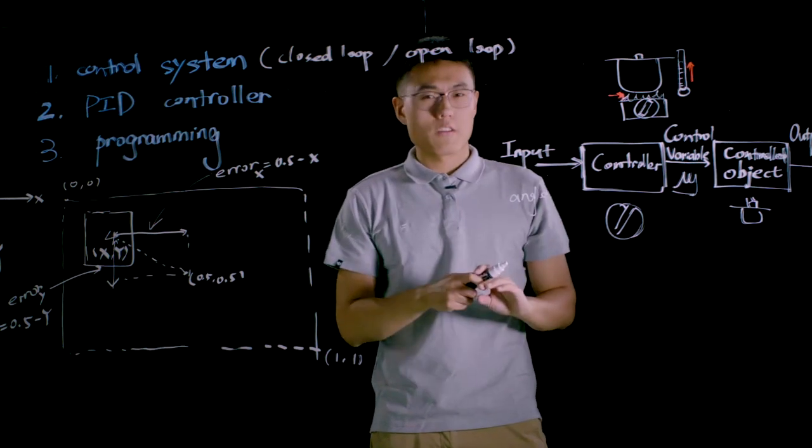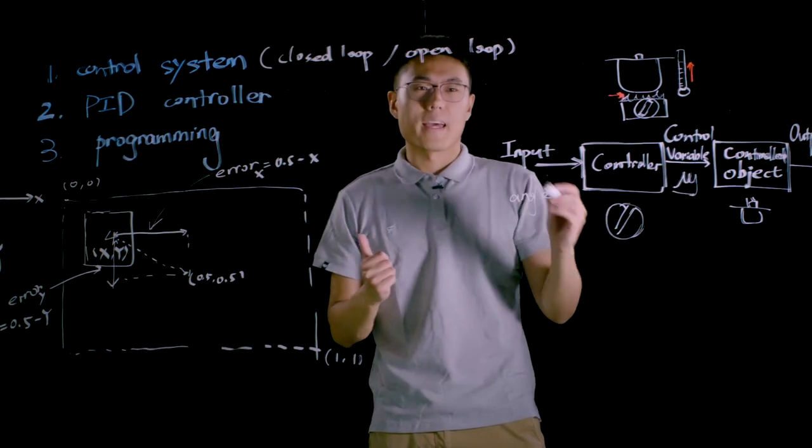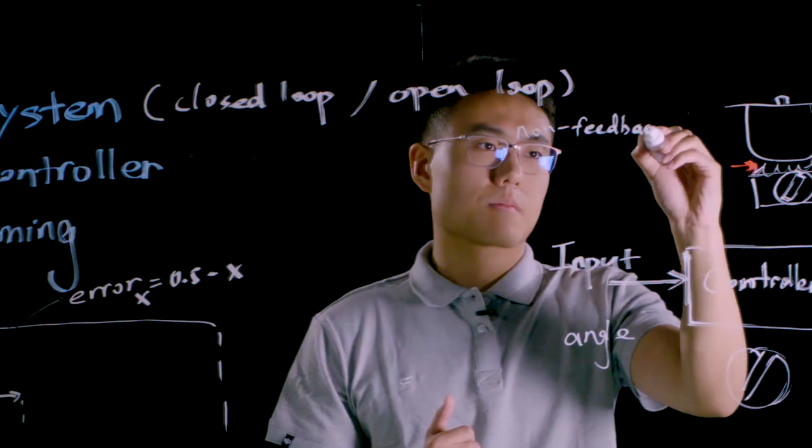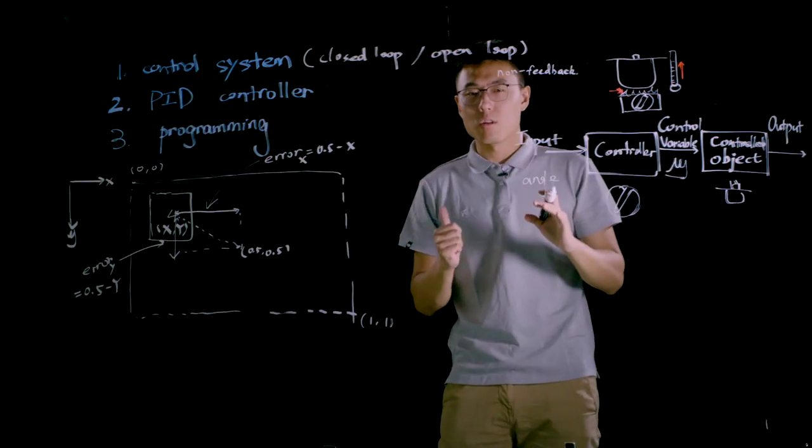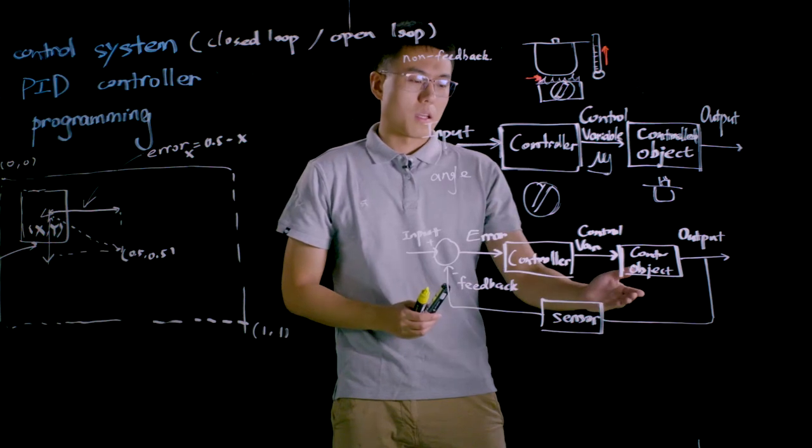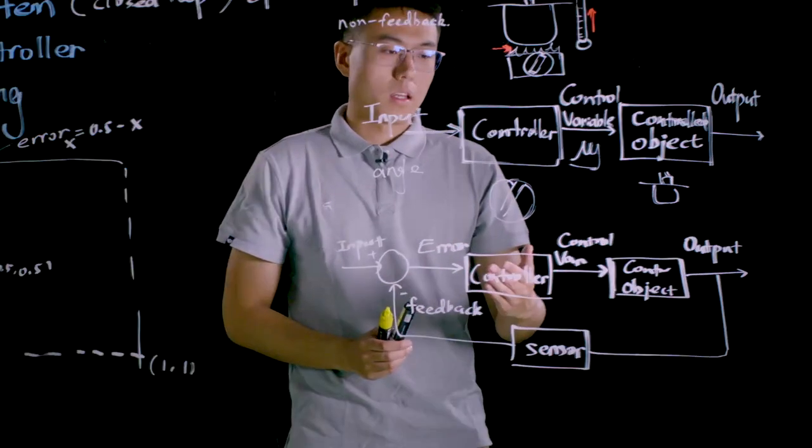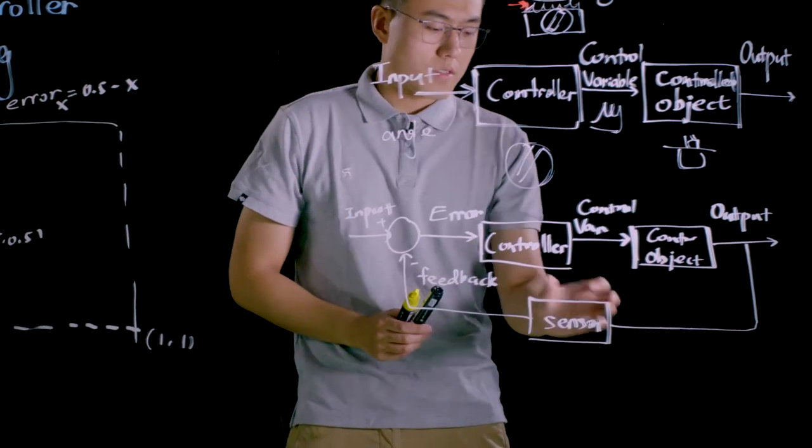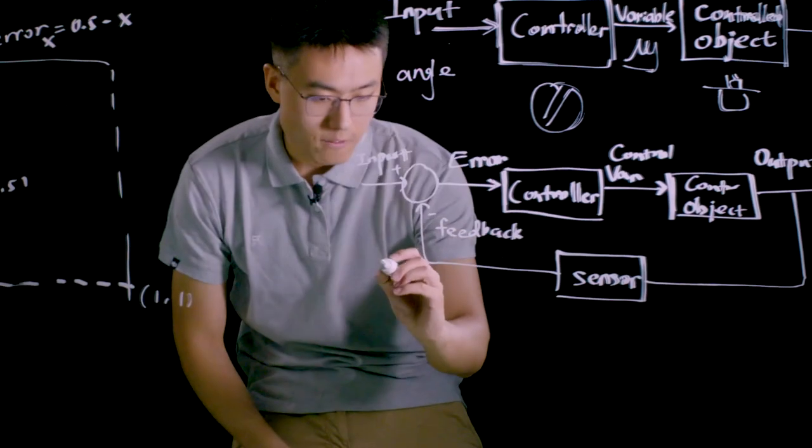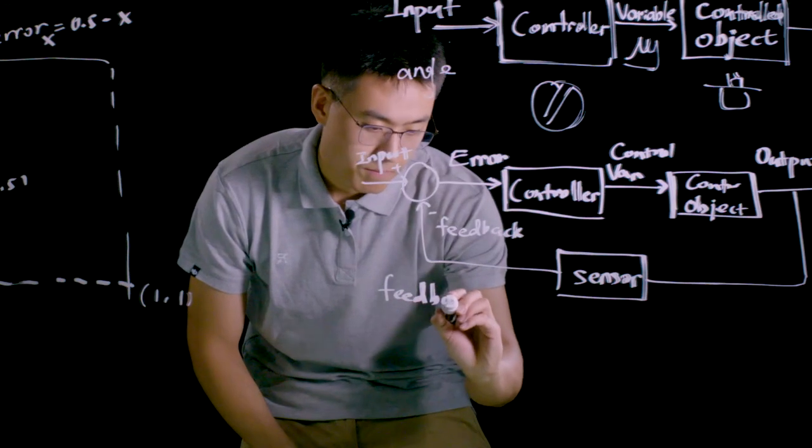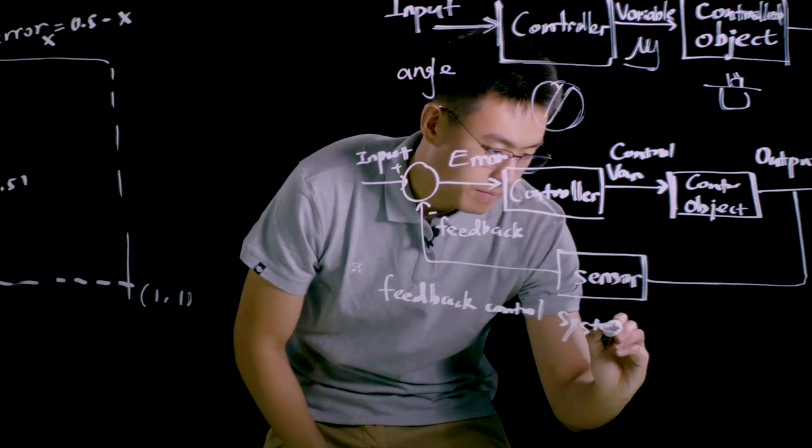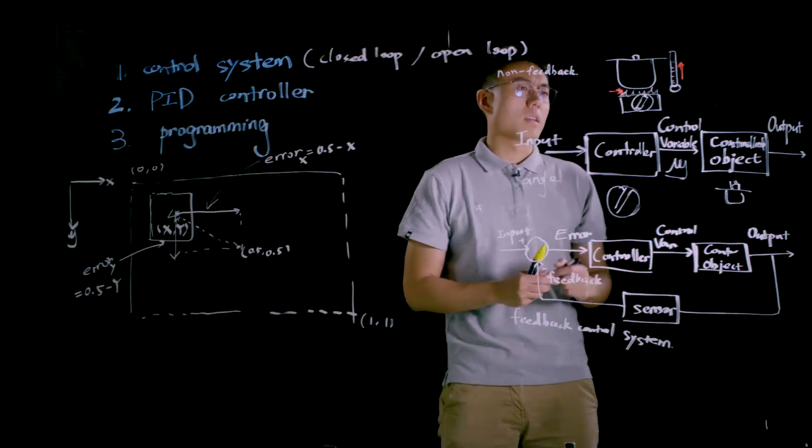In this open loop system, there is no feedback from the output value, so we also call this system a non-feedback control system. The advantage of this open loop control system is it has simple structure and very low cost. Let's take a look at the closed loop control system. Here's a diagram for the typical closed loop control system. Different from open loop control system, there's a sensor and it provides a signal path and forms a feedback loop, so it's also called a feedback control system.